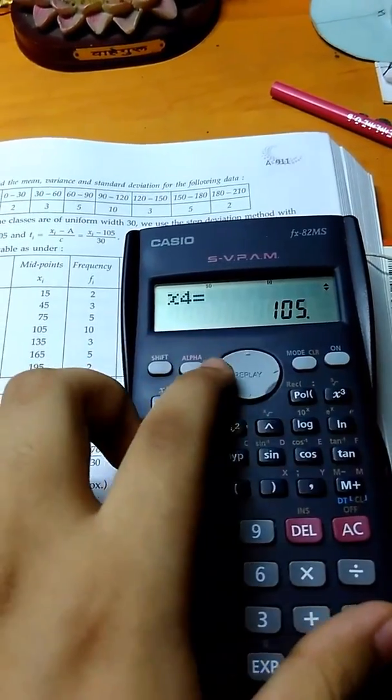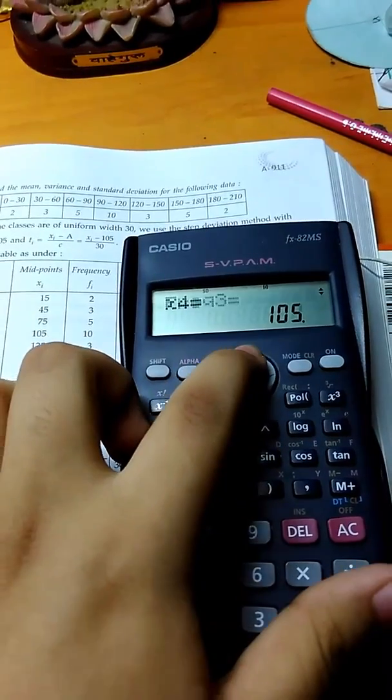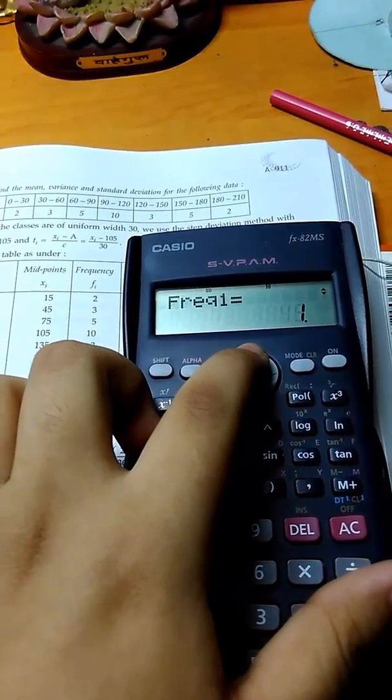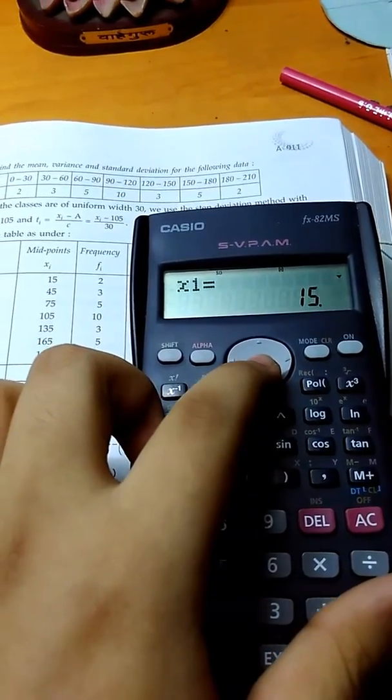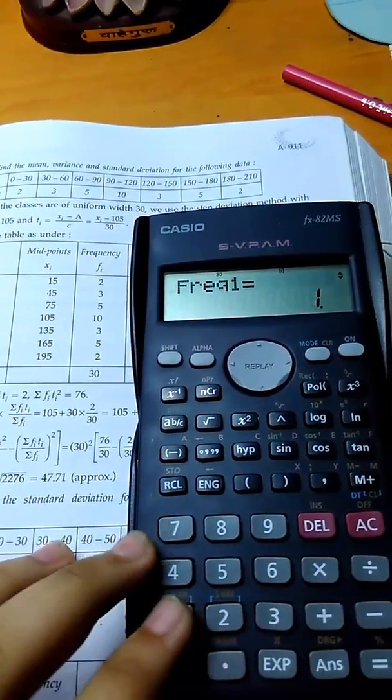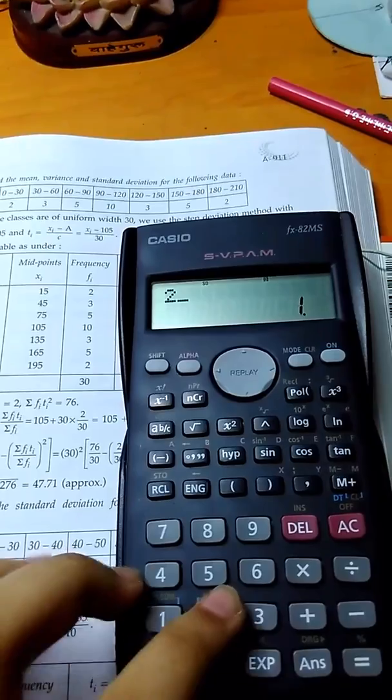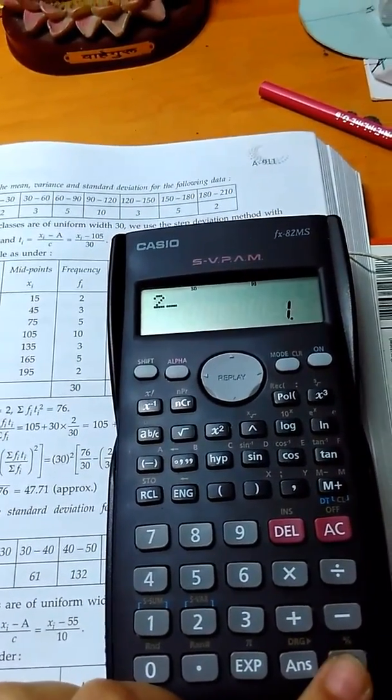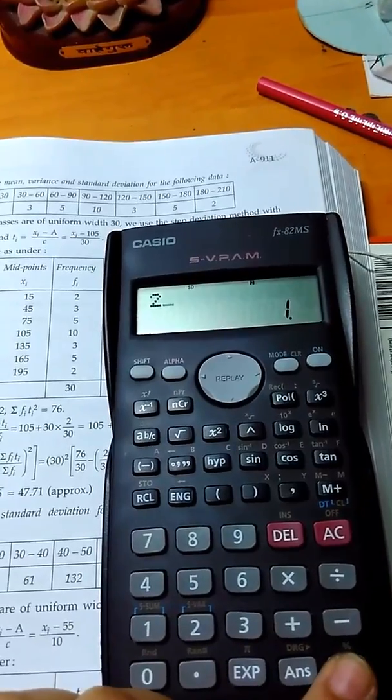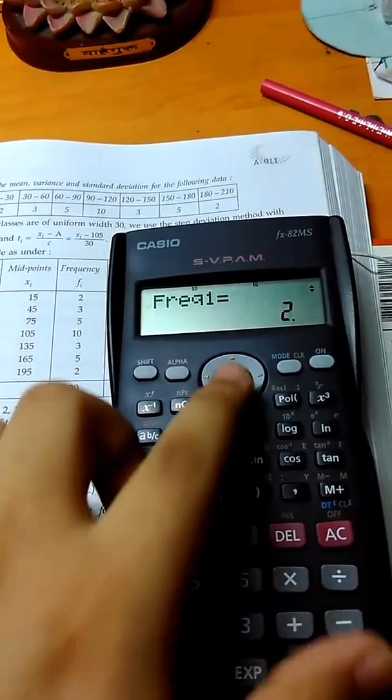you gotta press this upper arrow button here till you reach frequency 1 which corresponds to X1 which is 15. Now the corresponding frequency of F1 is 2. Then you enter 2 and you press the equal sign. Frequency 1 is 2.